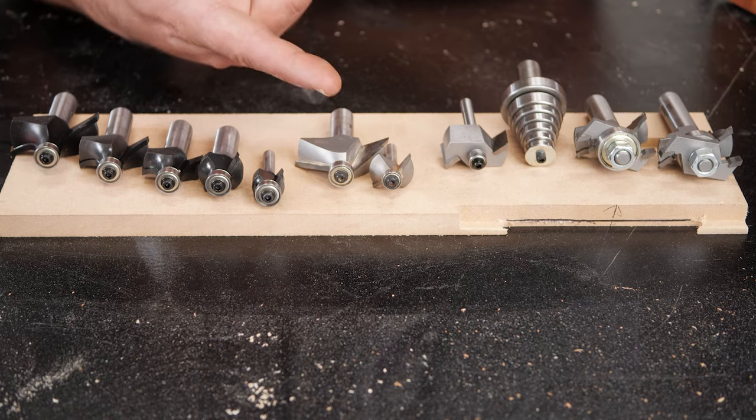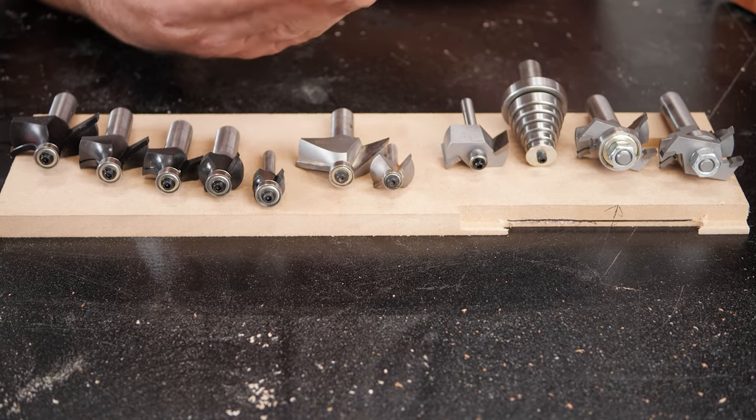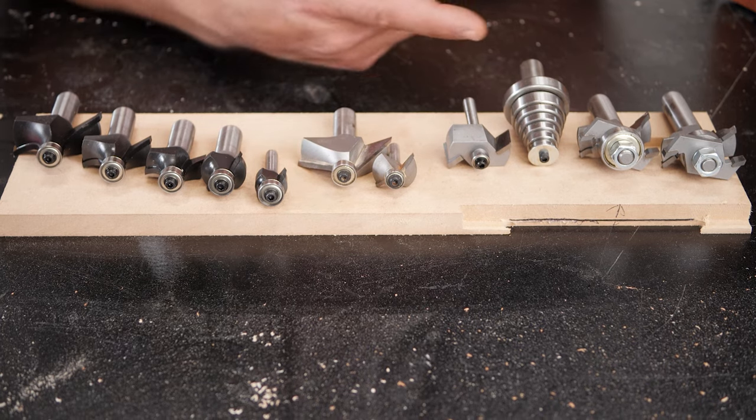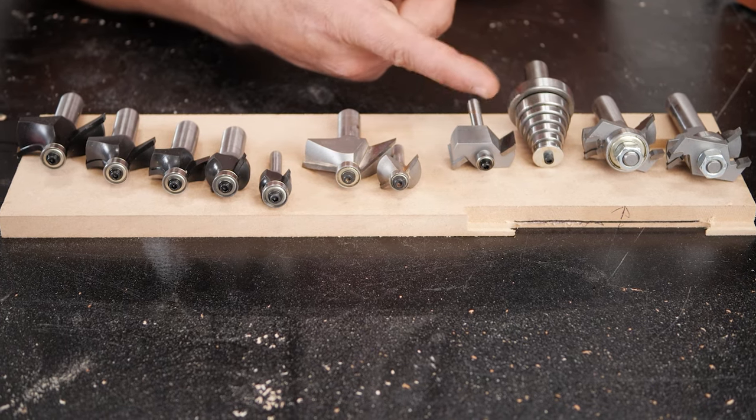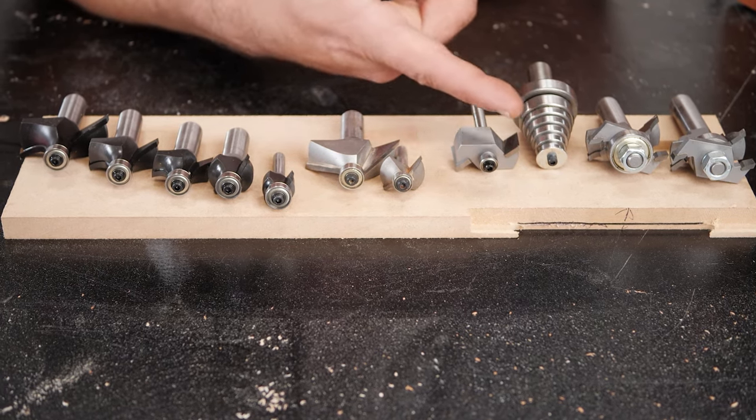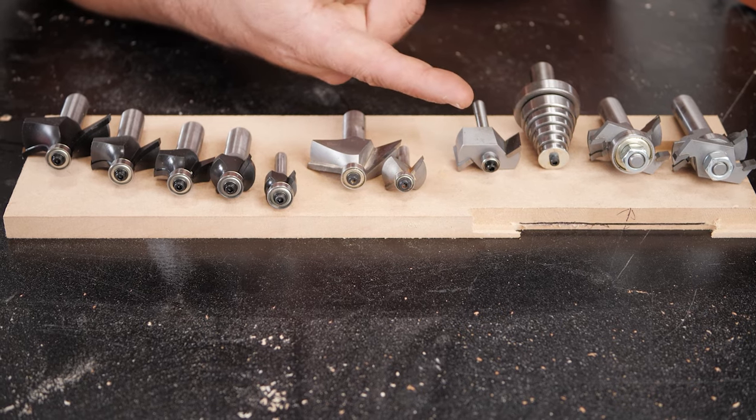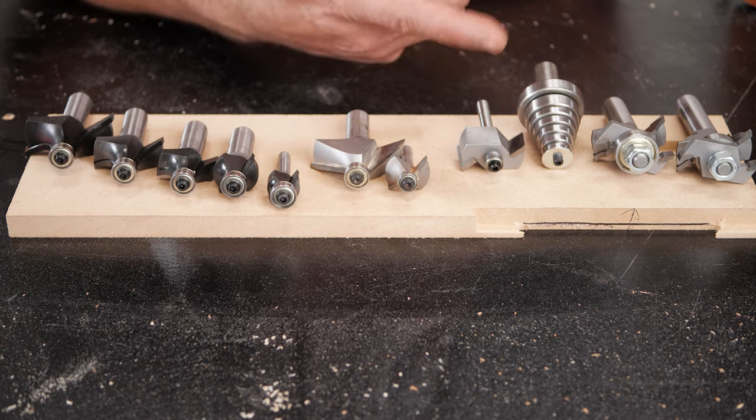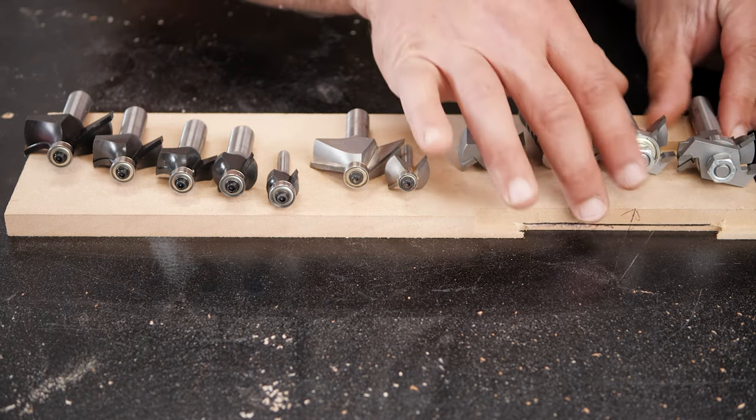These are chamfer bits for creating a 45 degree corner, great edge profile, really makes a project look really cool. And then this is a rabbiting bit that has different bearings. So you can get different size rabbits depending on the bearing. And this is a bit I don't use very often, but when you need it, it comes in really handy.